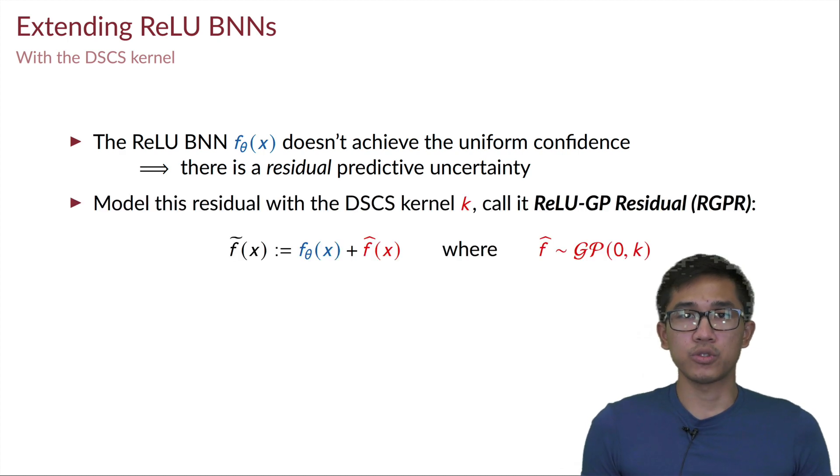So we propose to use the Gaussian process prior that arises from the previous kernel to model this residual, and then we focus on doing a Gaussian process posterior inference on this f̃, and this is called RGPR. This is our method.